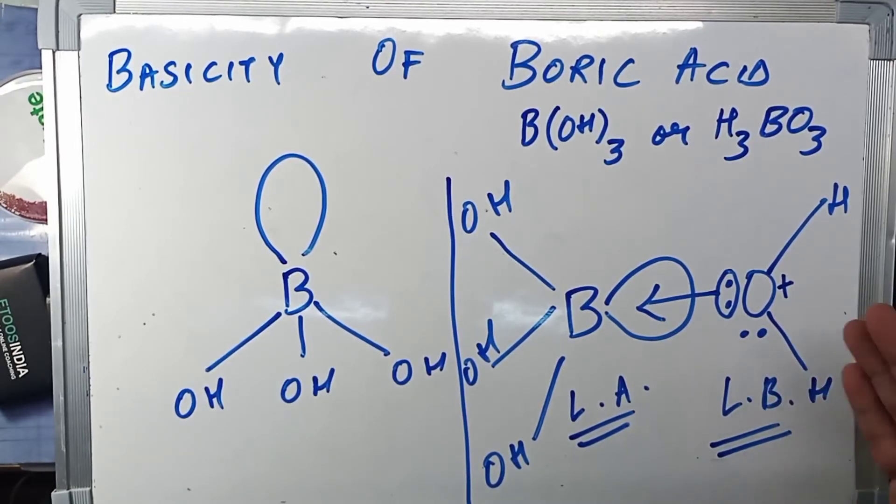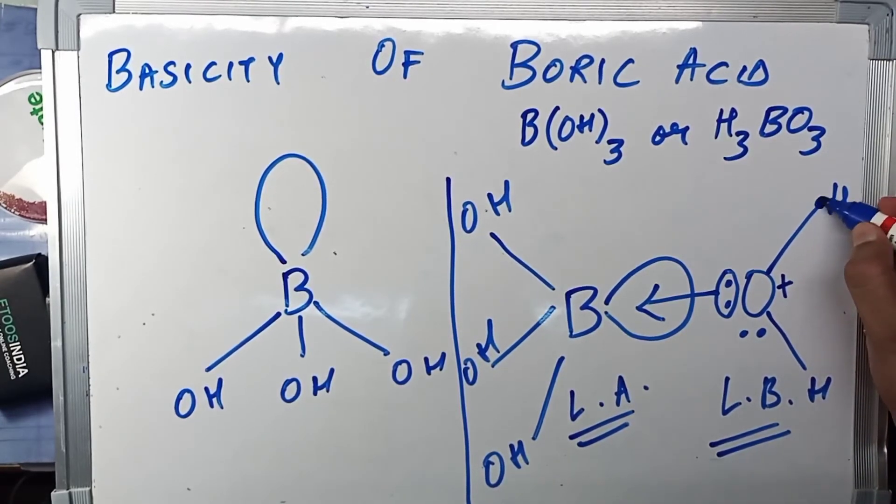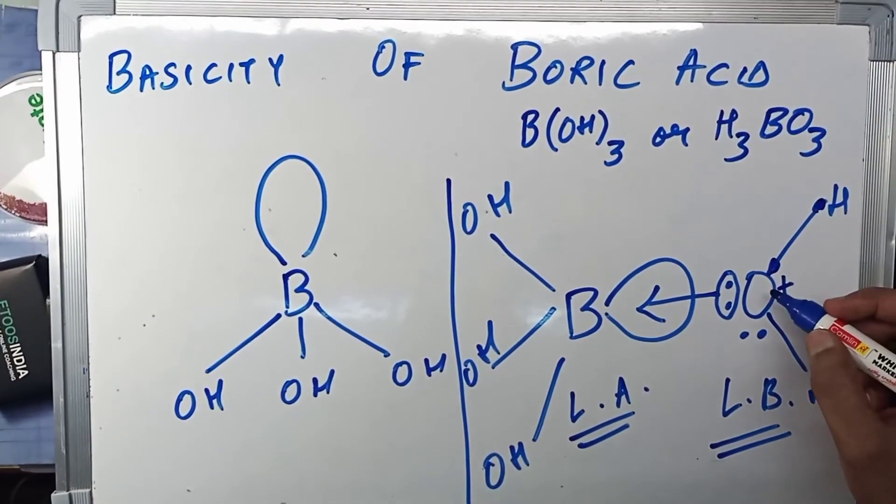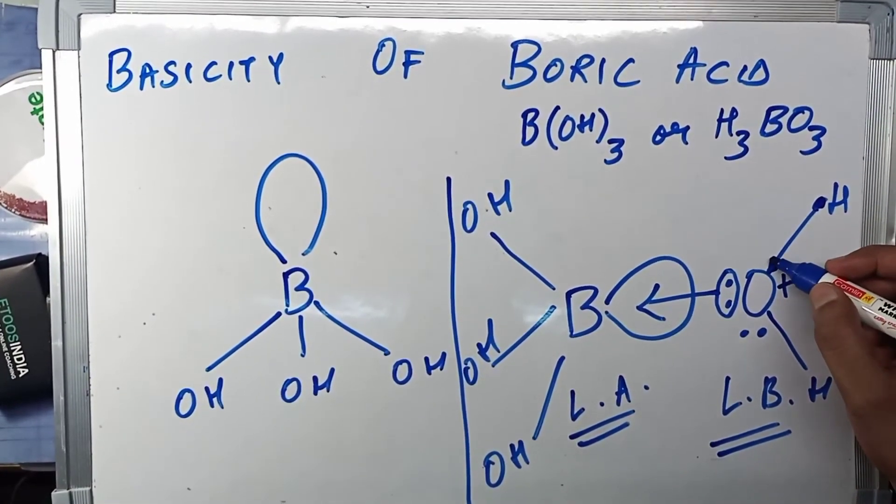A very highly electronegative element does not want to carry a positive charge—it likes negative charge. So what actually happens is this OH bond has two electrons, right?